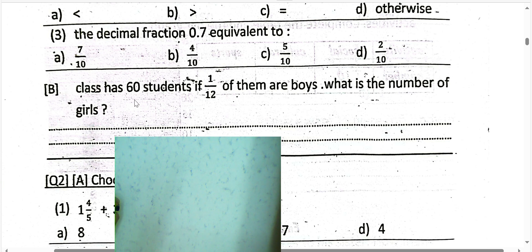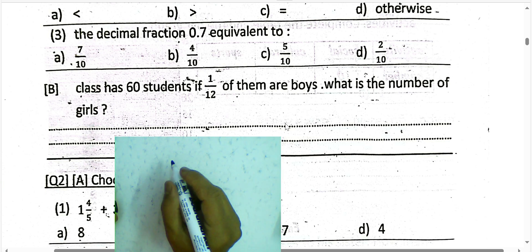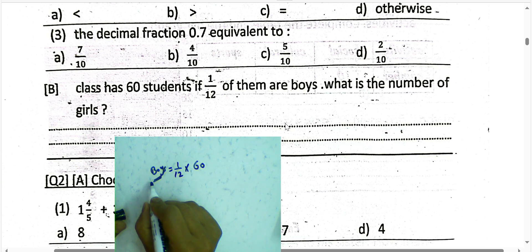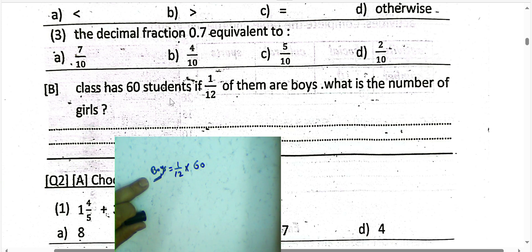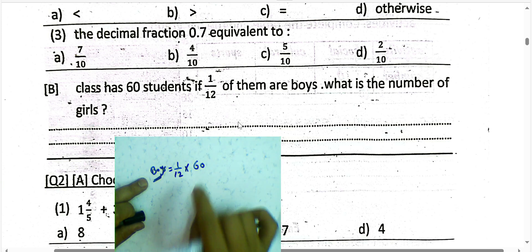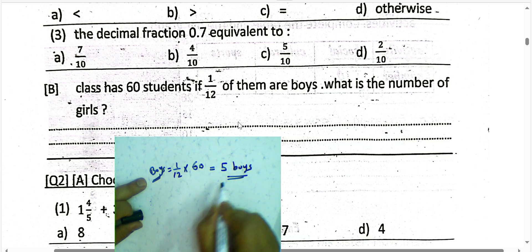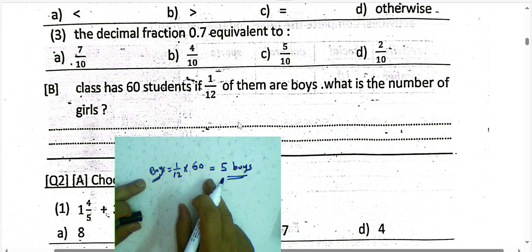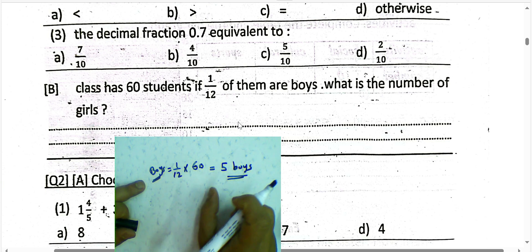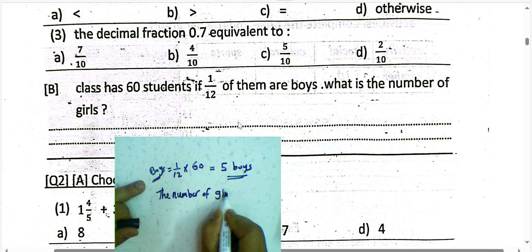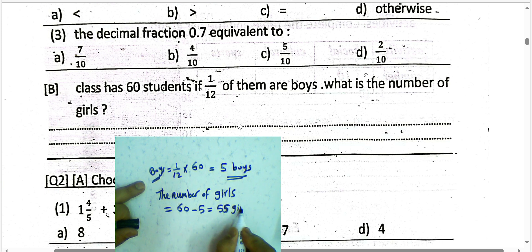Question letter B: a class has 60 students. If 1 over 12 of them are boys, what is the number of girls? We have 1/12 of 60 total students: 60 divided by 12 equals 5. So there are 5 boys. The number of girls equals 60 subtract 5, which equals 55 girls.